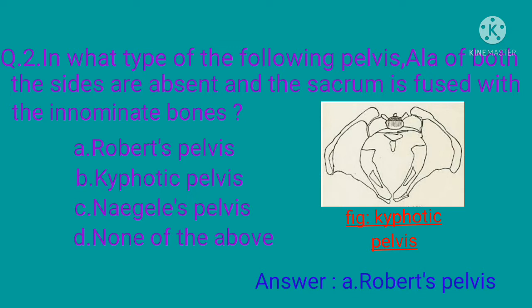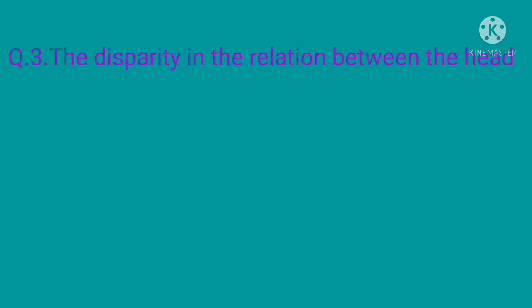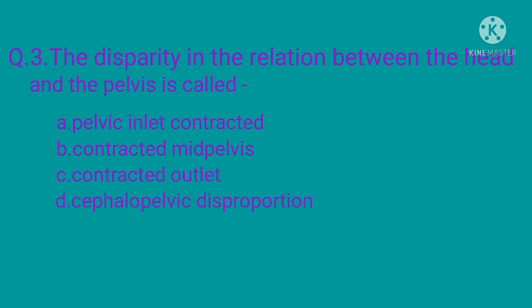In Naegele's pelvis, it is due to arrest in the development of one ala of the sacrum. In kyphotic pelvis, there are changes in the vertebral column — the sacrum is tilted backwards in the upper part and forwards in the lower part. It is narrow and straight. The anteroposterior diameter of the inlet is increased but diminished at the outlet, and the subpubic angle is narrow.